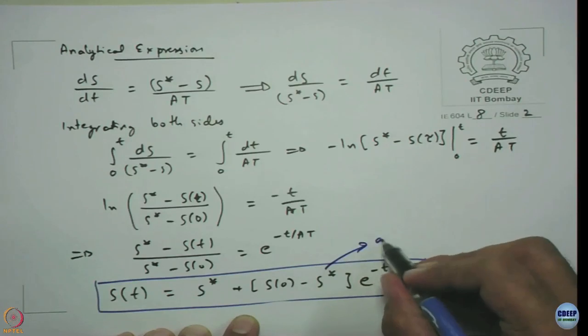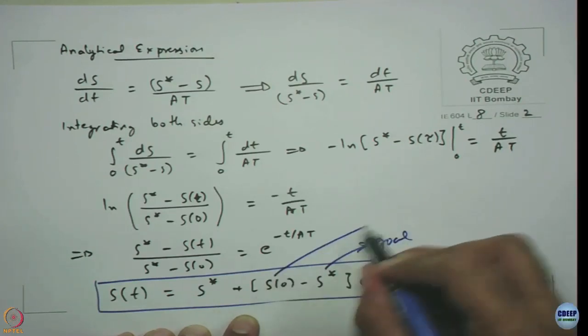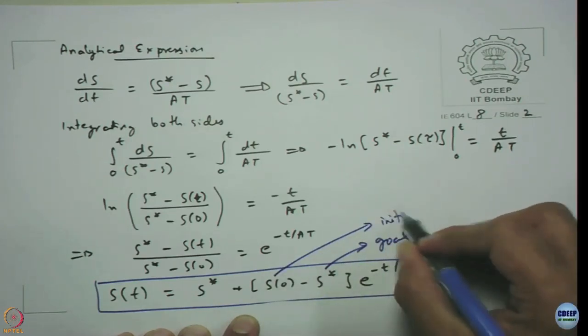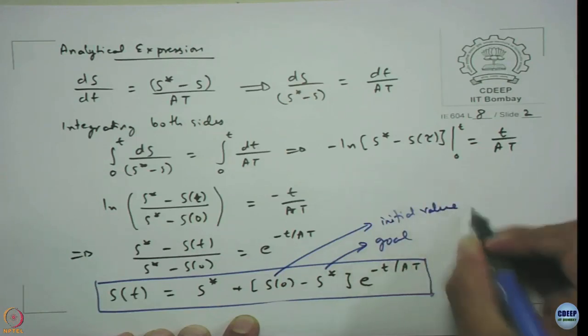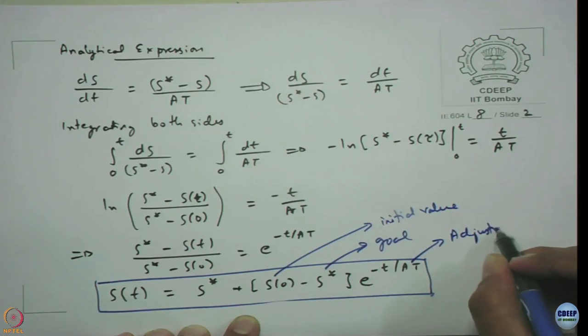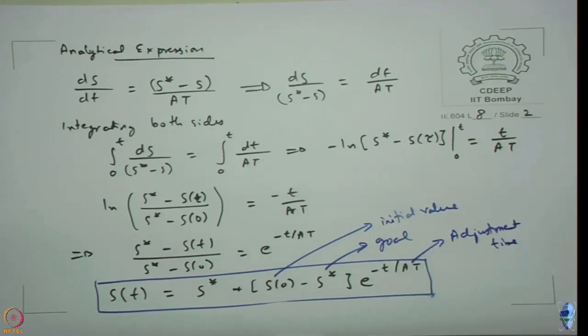s* is the goal, s(0) is the initial value, AT is your adjustment time, and t is the total time limit.